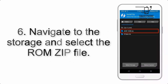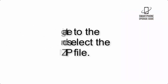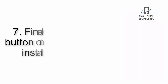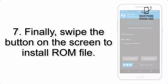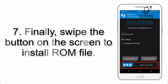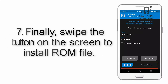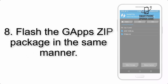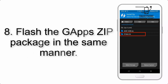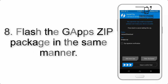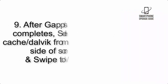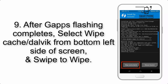Step 5: Go back to the recovery main screen and tap on the Install button. Step 6: Navigate to the storage and select the ROM zip file. Step 7: Finally, swipe the button on the screen to install the ROM file.